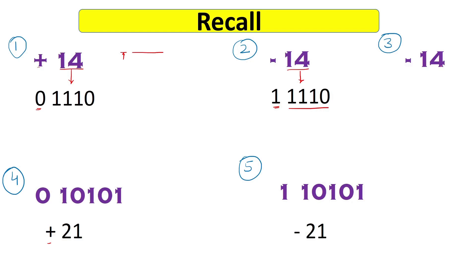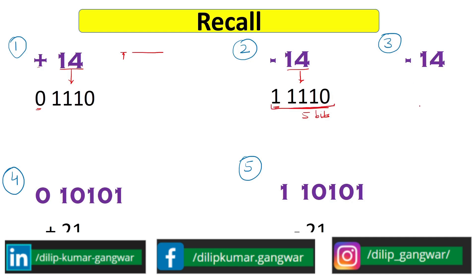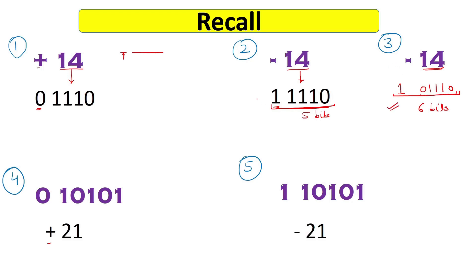Now if you want to express minus 14 in more bits — here we used 5 bits including the sign bit. If we want to represent it in 6 bits, the last bit is still reserved for the sign. For the magnitude 14, we use 5 bits and add a leading 0. These 5 bits still represent 14, and the total 6 bits represent minus 14. Both 5-bit and 6-bit representations are valid.